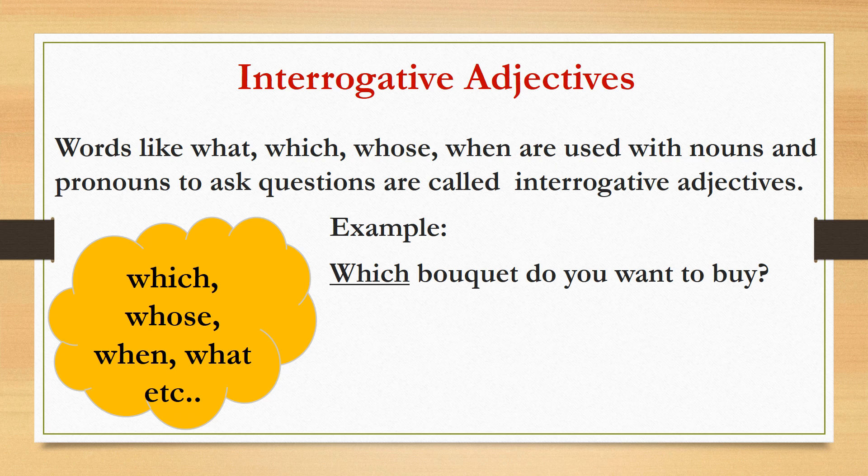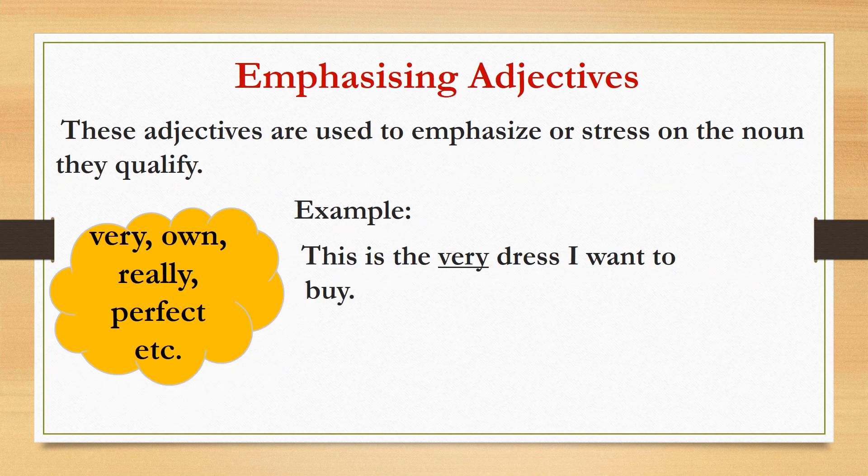Interrogative adjectives: Words like what, which, whose, when are used with nouns and pronouns to ask questions — these are called interrogative adjectives. For example: Which bouquet do you want to buy? The word which here will be an interrogative adjective because it is accompanied by a noun. Moving on, our next kind of adjective is emphasizing adjectives. These adjectives are used to emphasize or stress on the noun they qualify. For example: This is the very dress I want to buy. The word very is used as an emphasizing adjective. The words often used as emphasizing adjectives are very, own, really, perfect, etc.